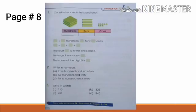Here we have count in hundreds, tens, and ones. How many hundreds? Three hundreds. How many tens we have? Five tens. And how many ones we have? Eight ones. Write in numerals, numerals means you have to write in numbers, and write in words means you have to write in spellings.